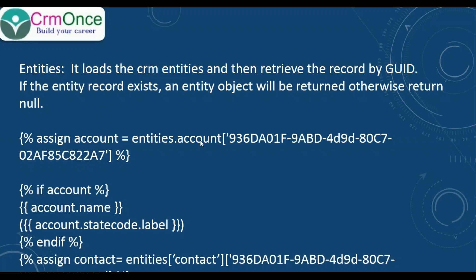For example, if I want to retrieve a certain account record with a specific GUID, at runtime in the web template it will retrieve the account record having that GUID. Below, we can add an if condition: if account is not null, then print account dot name and account dot status dot label, then end if.